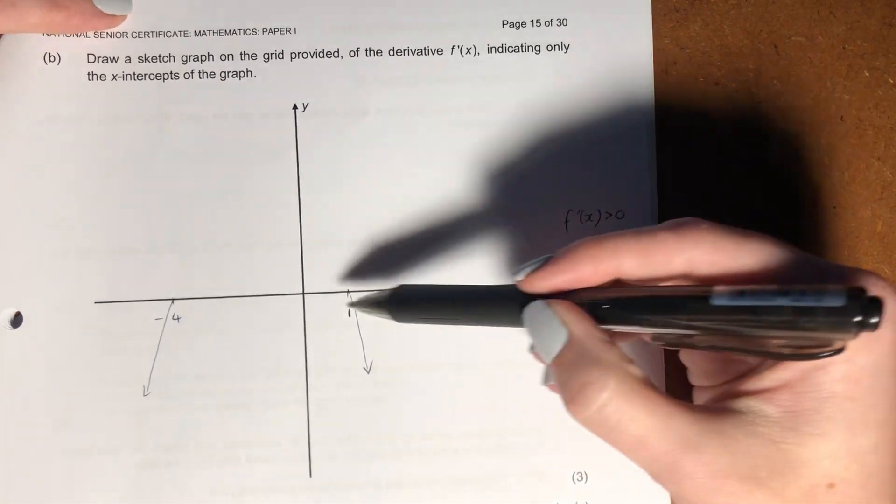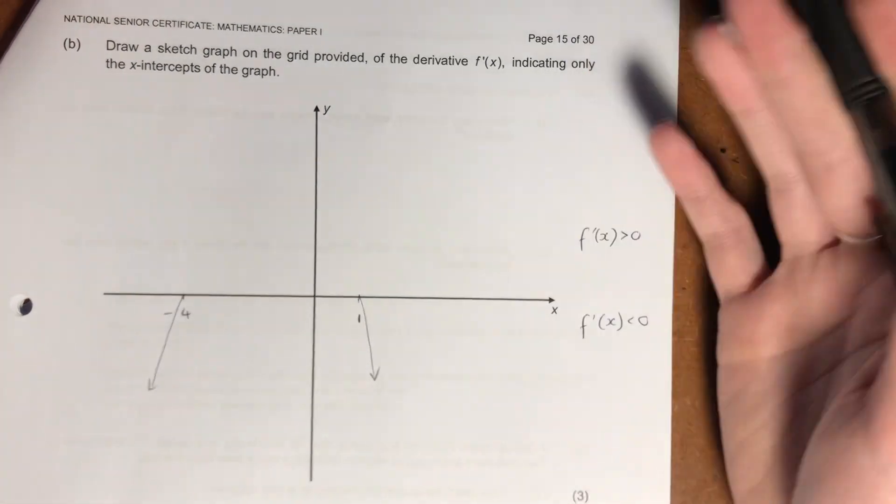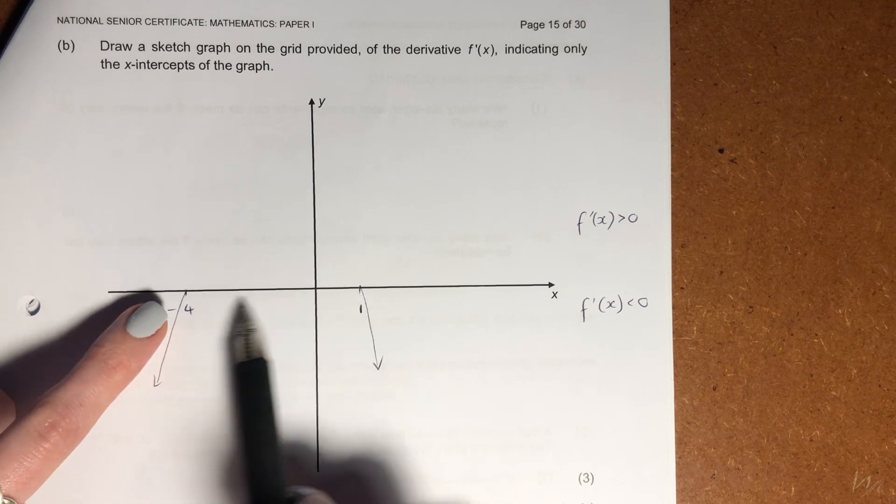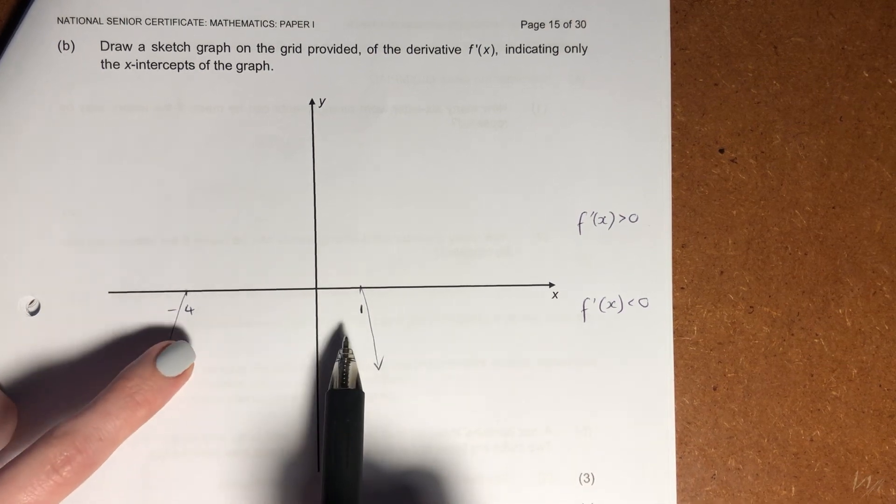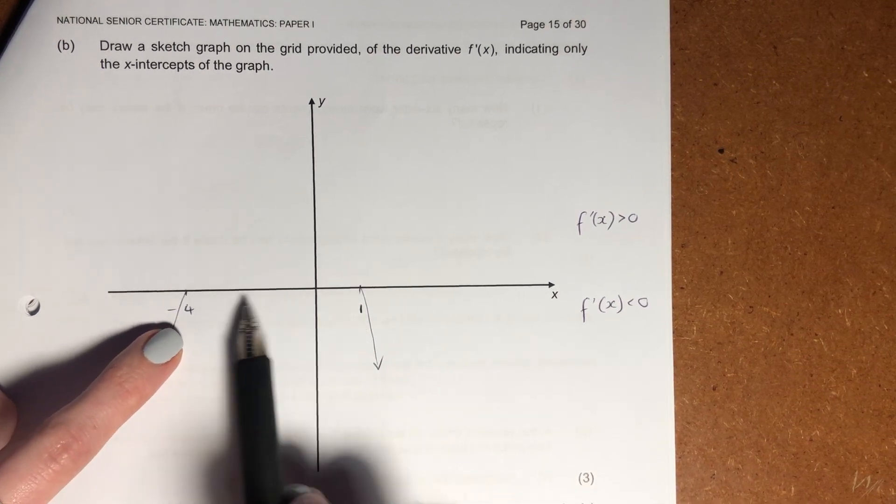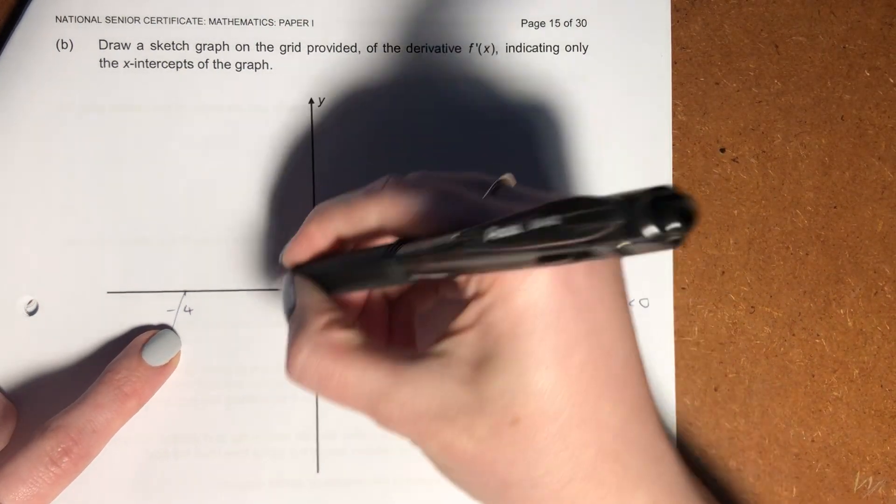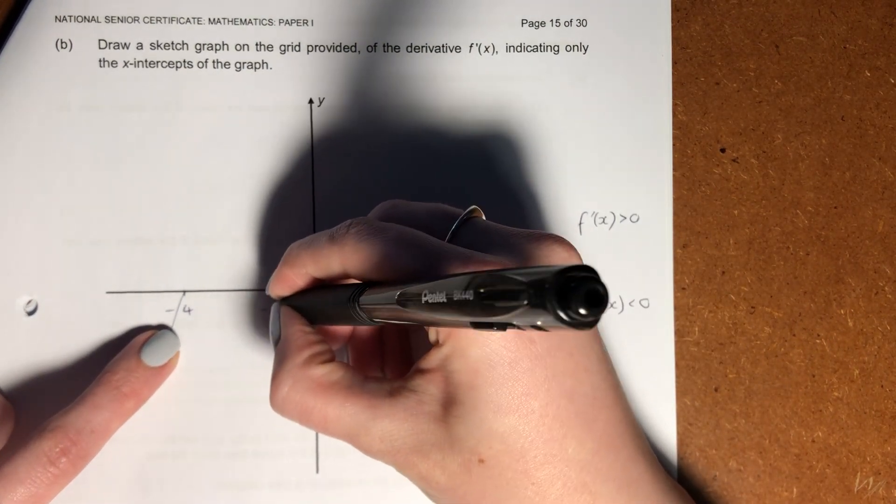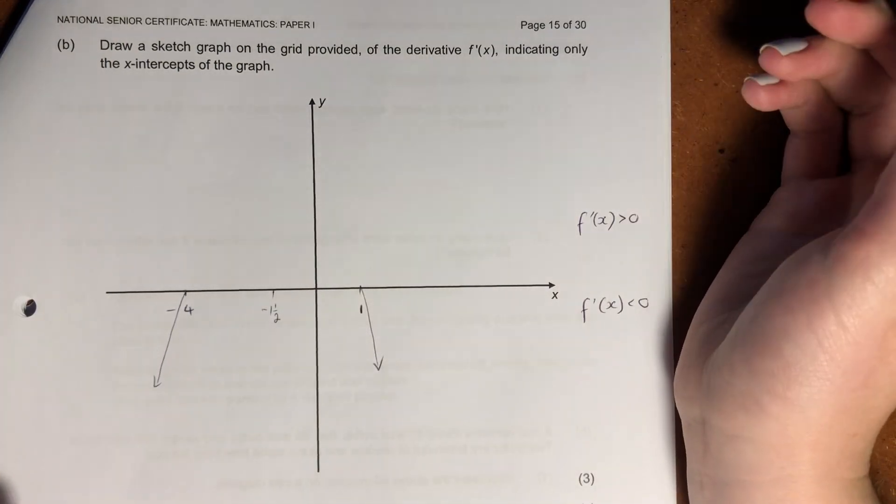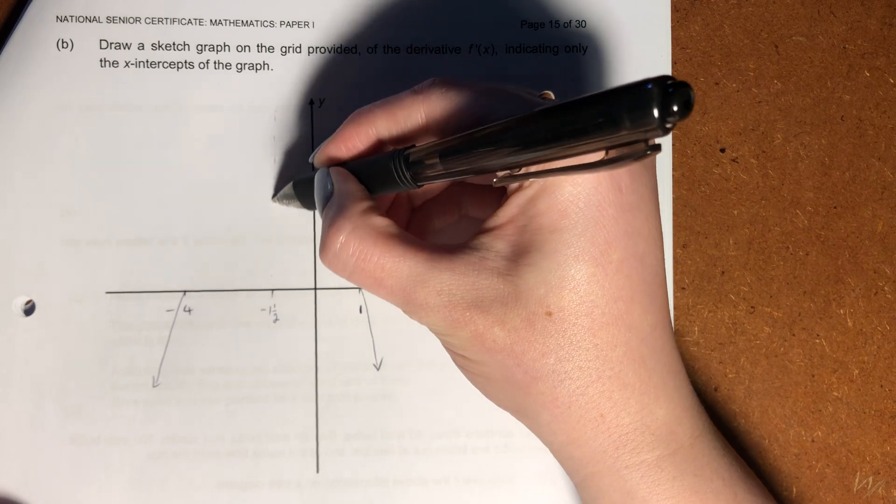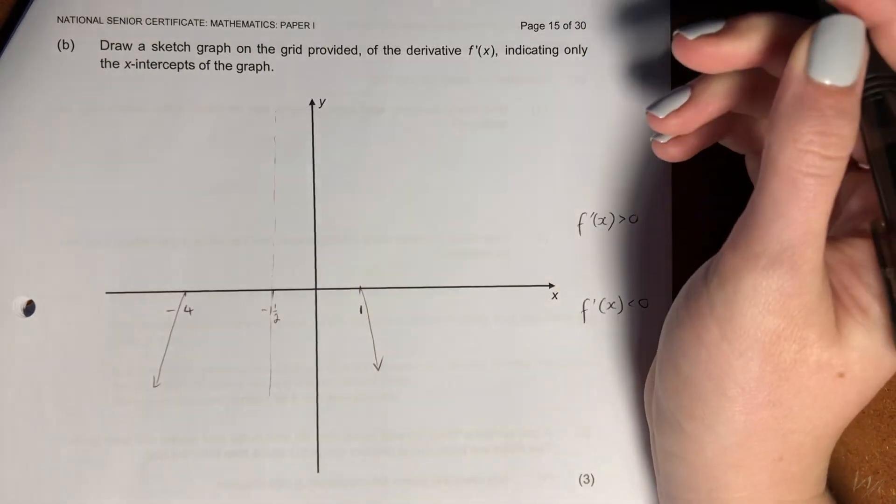Now, what's important here is we kind of have to find where our turning point is in order to draw this. How do we find our turning point for a parabola? It's always halfway between our two x-intercepts. So halfway between negative 4 and 1 is going to be negative 1½, so it's probably going to be over here somewhere. So we know that that's going to be where our turning point is. If you don't believe me, put this into your calculator.